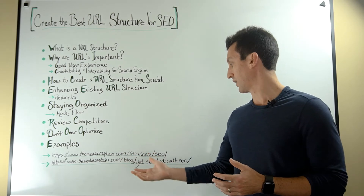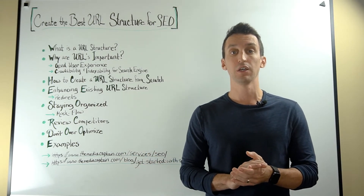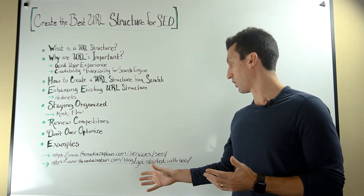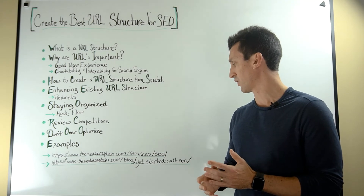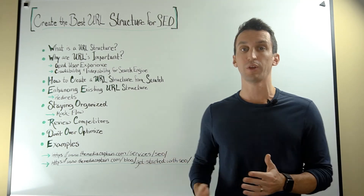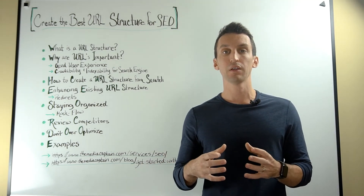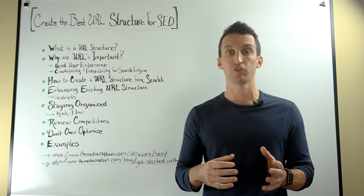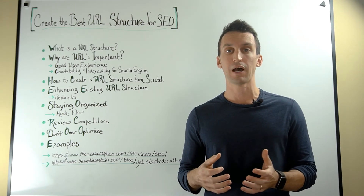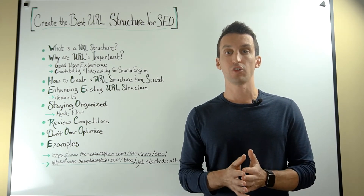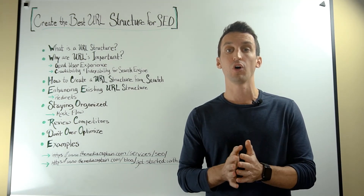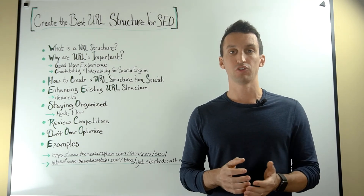Just some examples — on the Media Captain site, for our services it's nestled under /services/SEO. For a blog, which is probably hard to see here on the whiteboard, it's /blog. And we have an article on getting started with SEO. By having different sections — one for blog, one for services — even when you have two related topics, search engines are going to know the difference. And of course, this is all structured within your sitemap. So when you submit a sitemap to Google, they are going to know how things are structured.